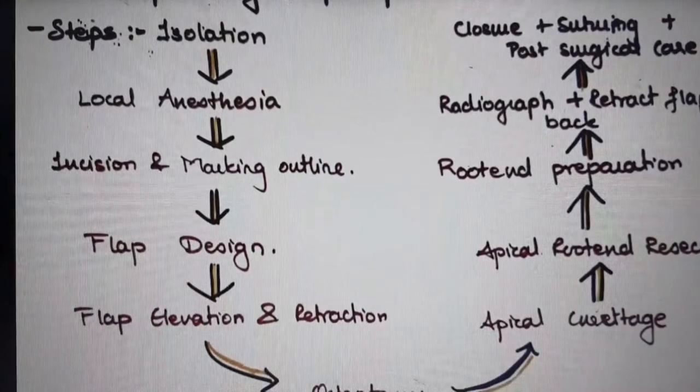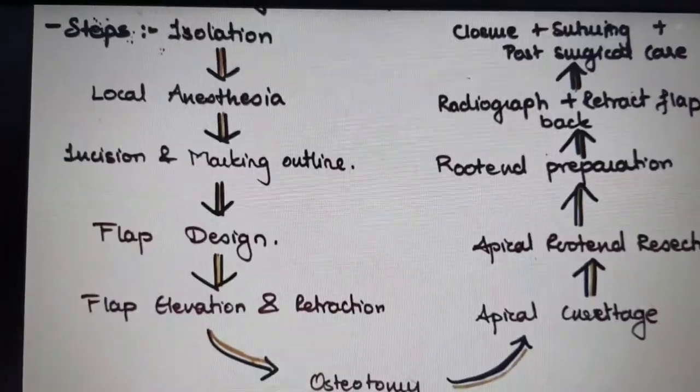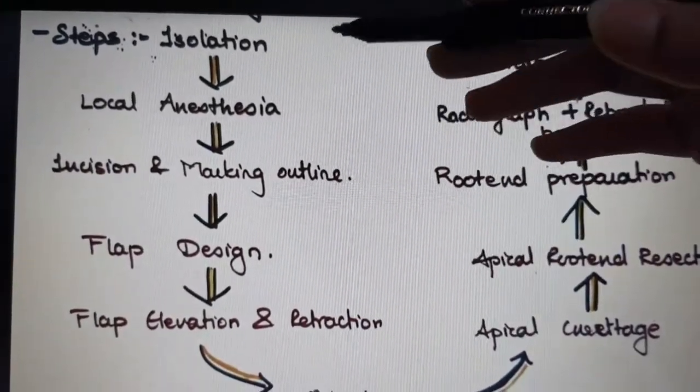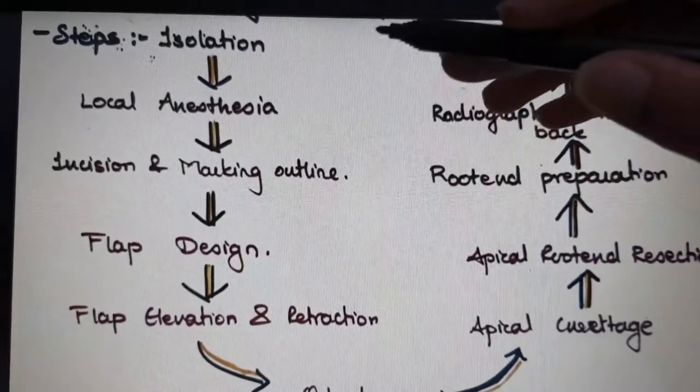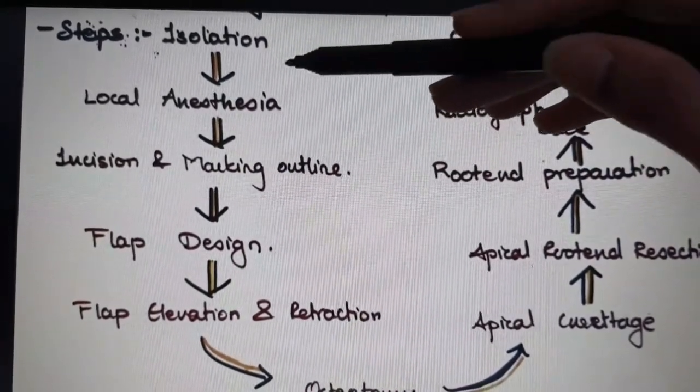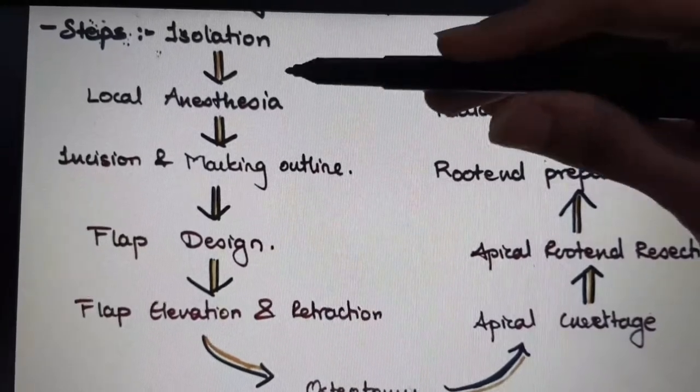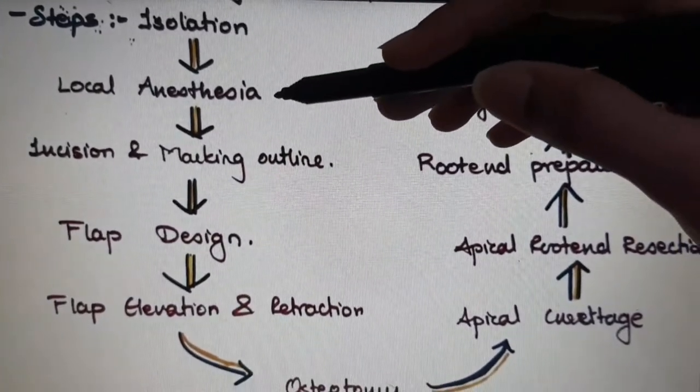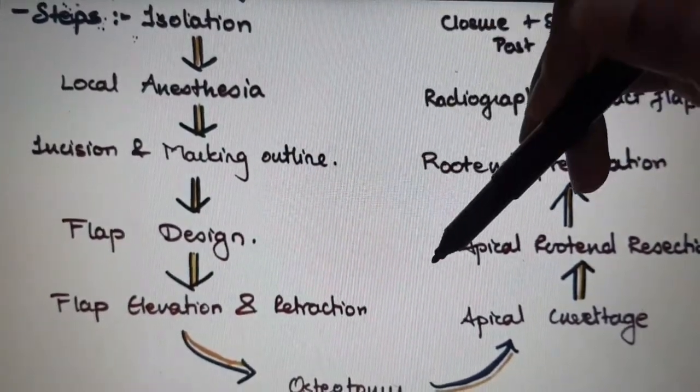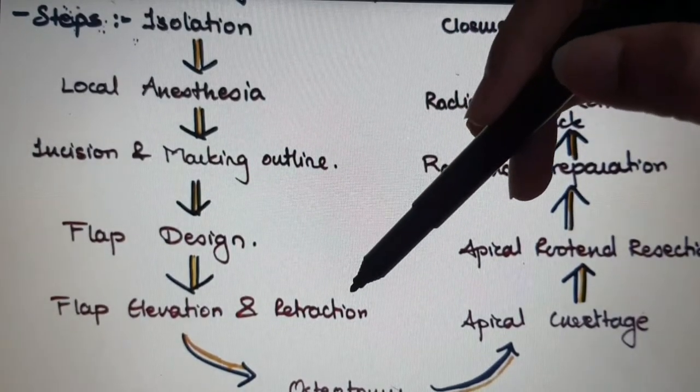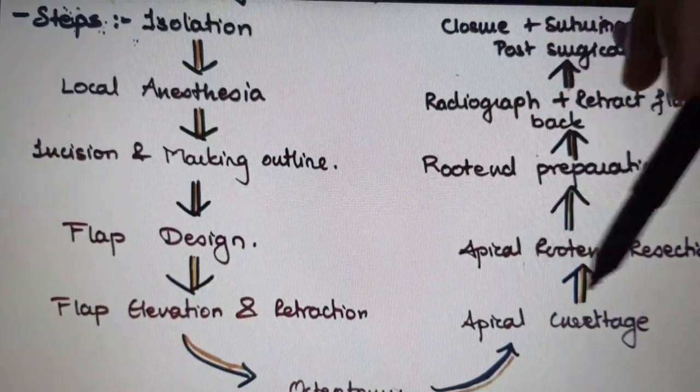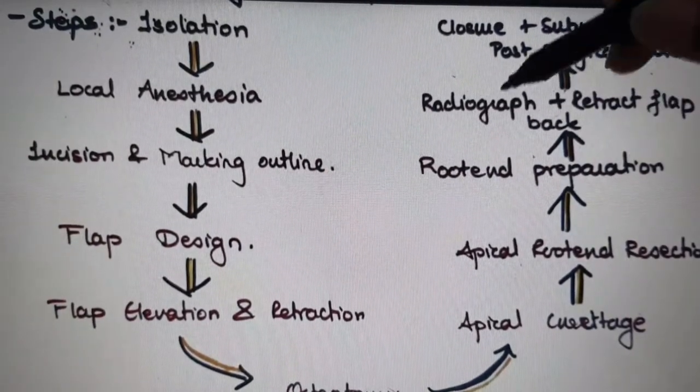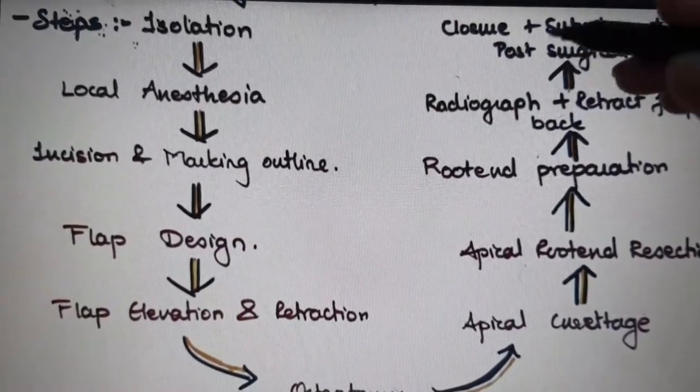Moving forward to the steps of apexectomy procedure, this is a flowchart I have prepared. First step is isolation, then local anesthesia, incision and marking the outline, flap design, flap elevation and retraction, osteotomy procedure, apical curettage, apical root end resection, root end preparation, radiograph and retract the flap back, then closure, suturing, and post-surgical care.